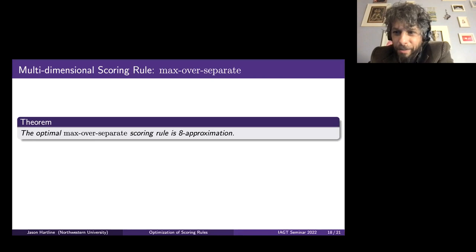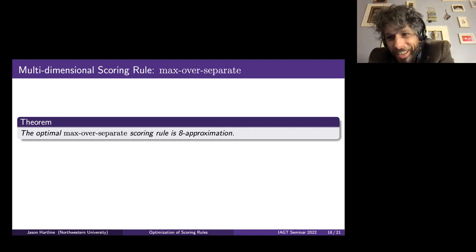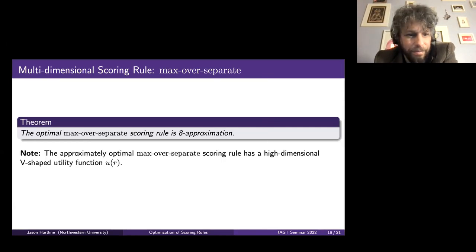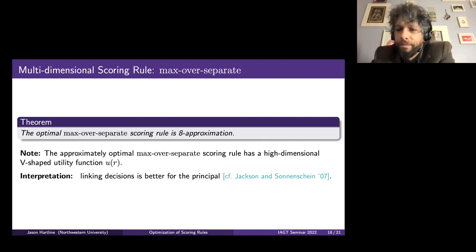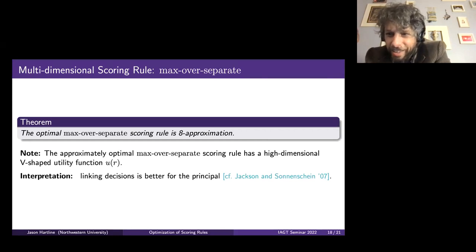For general distributions, the optimal rule is going to be complicated, but this says something simple is actually pretty good. Once I symmetrize things, this simple symmetric result gives you the answer — and the fact that n doesn't enter is noticeable. This observation that you can do much better than the separate scoring rule has nice analogies to linking decisions: even if the dimensions are independent, you still want to link them across dimensions to get the optimal scoring rule.